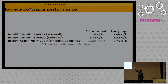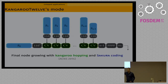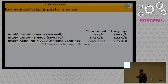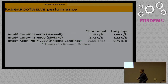Concretely, on a Skylake processor, Kangaroo12 runs at 3.72 cycles per byte for short inputs and goes down to 1.22 cycles per byte when there is enough input to fully exploit parallelism. On the Knight's Landing architecture, which has 512-bit vector registers allowing eight permutations in parallel, the number of cycles per byte drops below one cycle per byte — which is really fast.